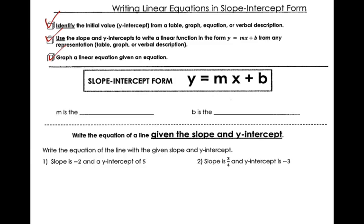Alright, so, little review. Our equation is y equals mx plus b. m is the slope, b is our y-intercept.